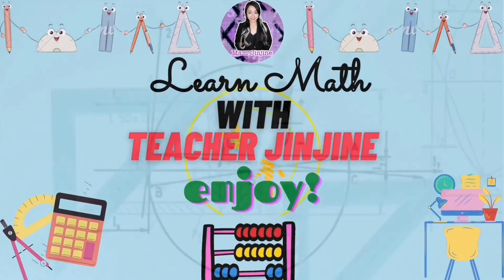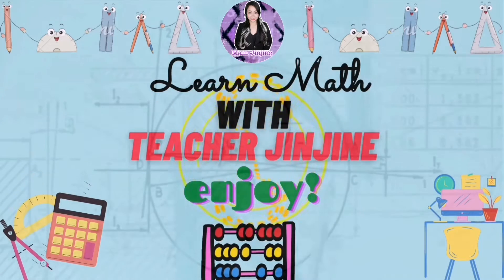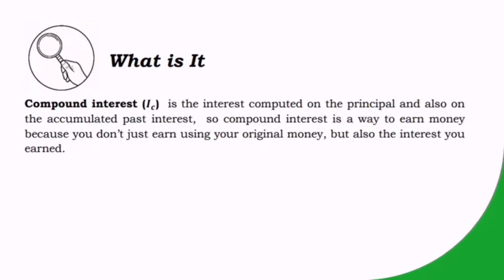Compound interest is the interest computed on the principal and also on the accumulated past interest. Compound interest is a way to earn money because you don't just earn using your original money, but also the interest you earned.